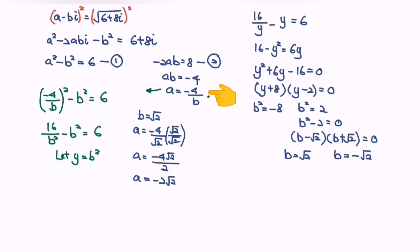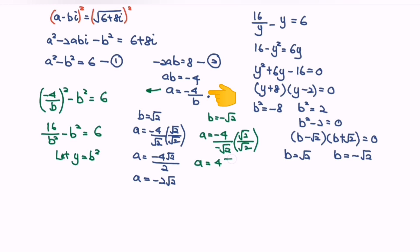Next, if b equals negative square root of 2, then a equals negative 4 over negative square root of 2. Again, rationalize the denominator by multiplying by the conjugate, and we get a equals 4 times square root of 2 over 2, so a equals 2 square root of 2.